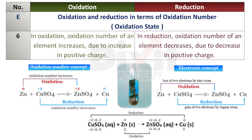Point number 6: Oxidation and reduction in terms of oxidation number or oxidation state. In an oxidation reaction, the oxidation number of an element increases due to increase in positive charge. In a reduction reaction, the oxidation number of an element decreases due to decrease in positive charge. Example: when zinc is added to copper sulfate solution, a displacement reaction occurs. Zinc, being more reactive than copper, displaces copper from copper sulfate solution, forming zinc sulfate and depositing copper metal. This is a redox reaction. Zinc is oxidized — it undergoes loss of electrons and its oxidation number increases from 0 to +2. Copper ions are reduced — they undergo gain of electrons and the oxidation number of copper decreases from +2 to 0.